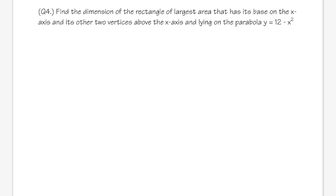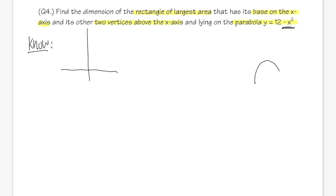Number four: find the dimensions of the rectangle with the largest area such that the base is on the x-axis, two vertices are above the x-axis, and they lie on the parabola y = 12 − x². Try this yourself before continuing — you've seen three examples already. We know we have a downward-opening parabola shifted up 12 units.